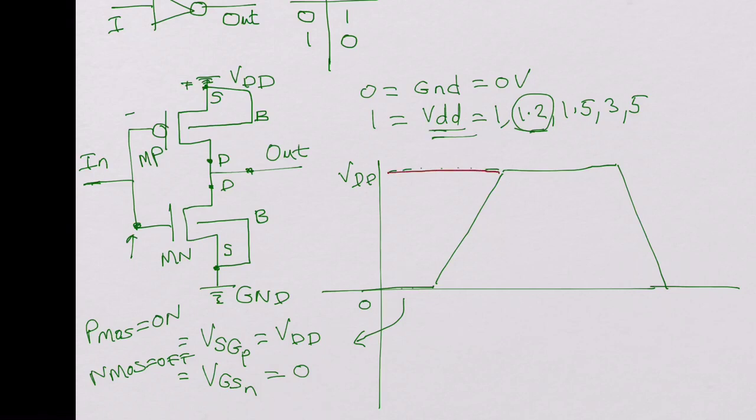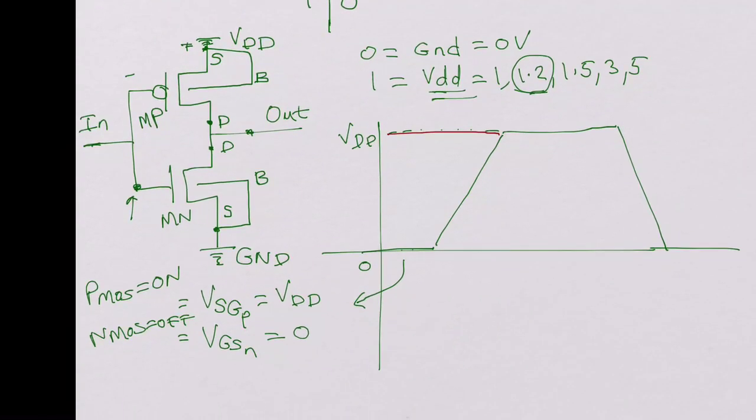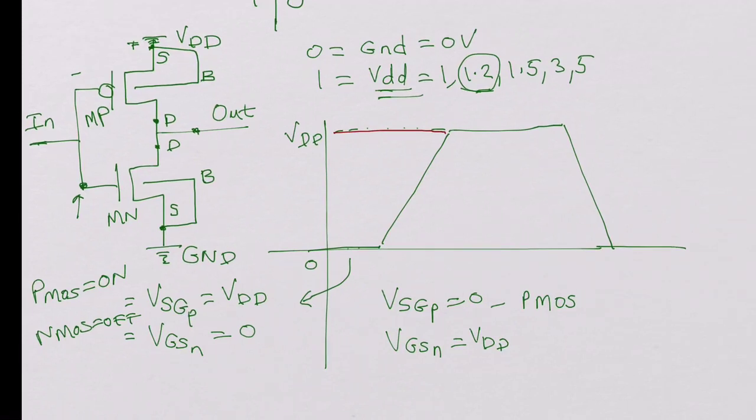So you know that when the PMOS is on, it charges VDD to the output. So your output should be at VDD. So if you look at output, it would be at VDD. And now once the input goes from 0 to VDD, now let's look at what happens there. When input is VDD, VSG of PMOS becomes 0 and the VGS of the NMOS becomes VDD, which means the PMOS will be off and the NMOS is on.